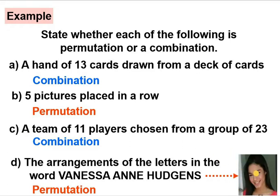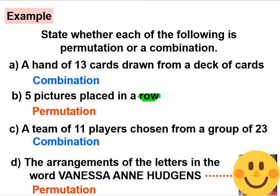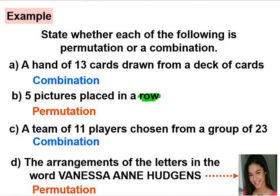For c, a team of 11 players chosen from a group of 23. This is a combination because we want to choose 11 persons to become players from 23 candidates but the order of the chosen players is not important. For d, the arrangement of the letters in the word Vanessa Anne Hudgens. It is permutation because order is important, because if we reshuffle the letters it will form another word.